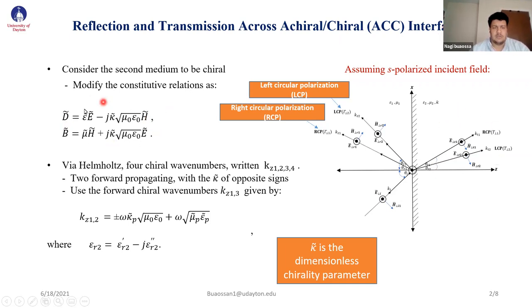This means we modify the constitutive relation. There are four chiral wave numbers: two forward, two backwards. We apply the two forward propagations assuming explicit incident field. We have two reflection waves and two transmission waves, left circular polarization LCP and right circular polarization RCP, by assuming the second medium to be lossy. This means we have dielectric losses.